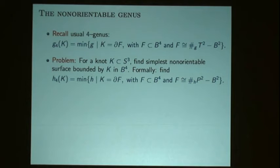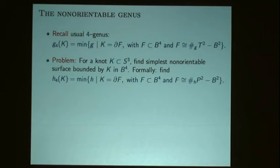The definition isn't entirely consistent — there's not a lot of literature on this. The way I've defined it, if a knot bounds a disk in the four-ball, the non-orientable genus is zero. But other than that, definitions aren't consistent.